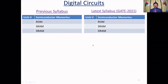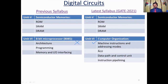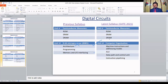Now the major change in digital circuits for GATE 2021 is in the last unit. Observe this: the entire 8085 architecture, programming, memory, and I/O interfacing related to the 8085 microprocessor have been removed. In its place, they have included computer organization topics: machine instructions and addressing modes, ALU, data path and control, and instruction pipelining. As a conclusion — unit one added floating point representation, unit two removed PLDs, units three through five are the same, and unit six replaced the 8-bit microprocessor with computer organization.